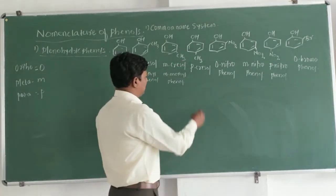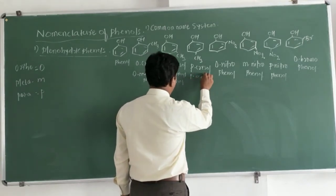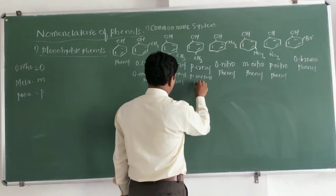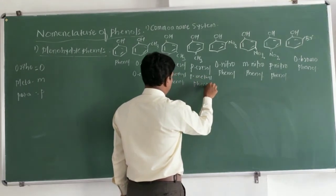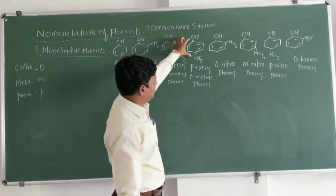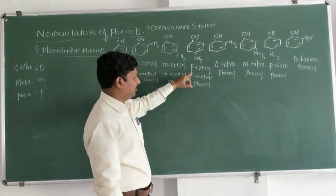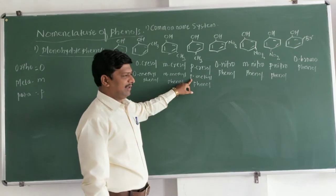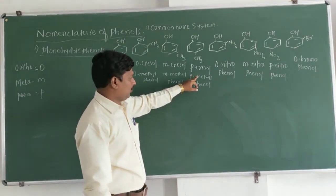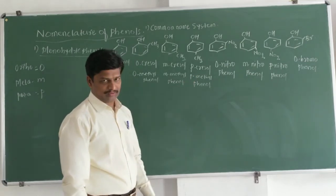The next structure's common name is para-methylphenol. Why para? Because when two substituents are present in the opposite position on the benzene ring, the para prefix is used. Therefore it is known as para-methylphenol.